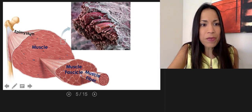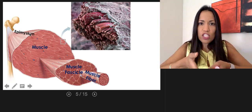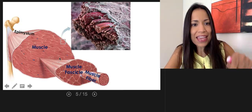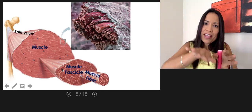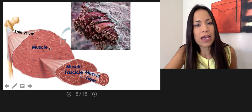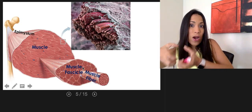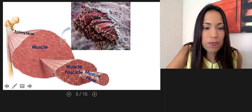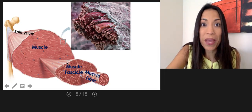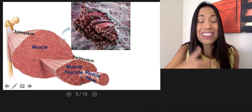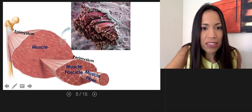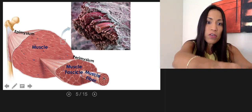The epimysium creates little invaginations like partitions inside the muscle, creating the muscle fascicles. It branches to create different compartments. So in here I have a muscle fascicle, another one, another one. We're pulling one of the muscle fascicles from the muscle. Each muscle fascicle is surrounded by another layer of connective tissue called the perimysium. It branches to create partitions inside the muscle fascicle to surround each individual muscle fiber.